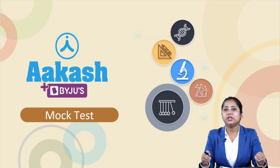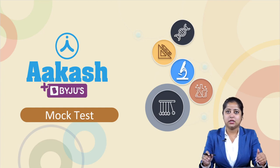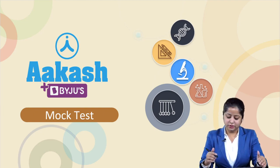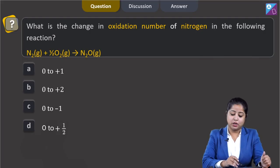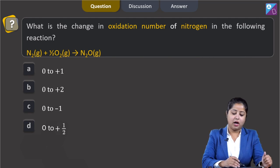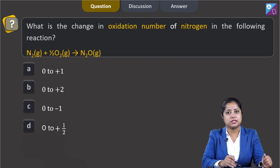Welcome, students, to the video solution of Akash plus Baiju's mock test. Today here, we will be discussing the chemistry section of the paper. So, let us start with the first question: what is the change in oxidation number of nitrogen in the following reaction? The reaction is N₂ (gaseous) + ½O₂ (gaseous) → N₂O (gaseous).